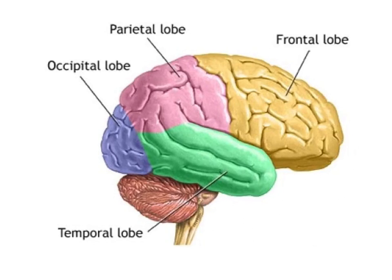The frontal lobe houses the motor cortexes. The motor cortexes help you move. In addition, mammals, like humans, have an additional part of their frontal lobe called the prefrontal cortex. The prefrontal cortex helps you make decisions and plans.